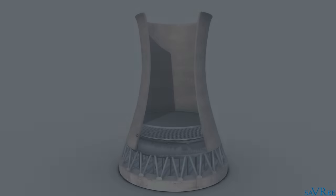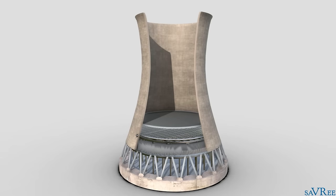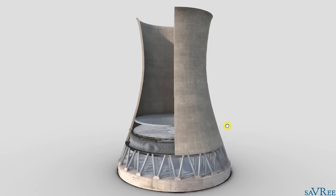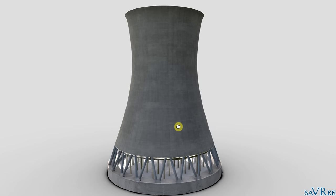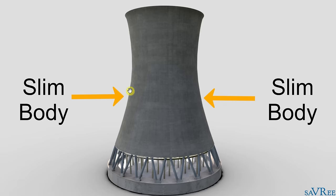As you can see, we've got a natural draft cooling tower in front of us now, and we can see that the design is very unique. They have a very unique shape. If you ever drive past one, or if you see one when you're out and about, you'll notice that they have this slim middle body, and it becomes gradually wider at the top and wider at the base.